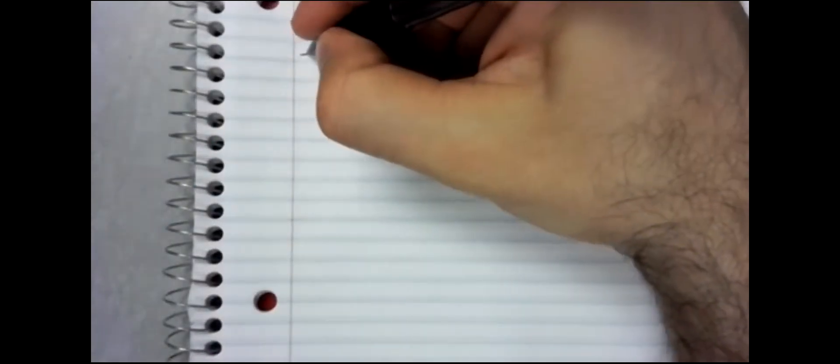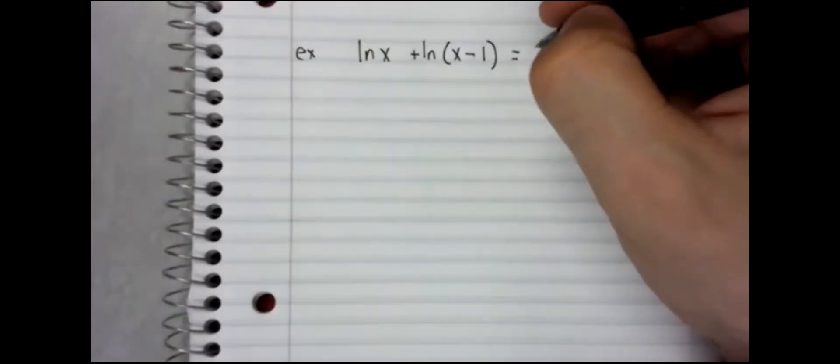So, let's look at logarithmic equations with multiple logarithms. For example, maybe we have the sum of two logarithms. The logarithm of x plus the logarithm of x minus one, and that equals something, let's say that equals three.